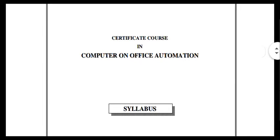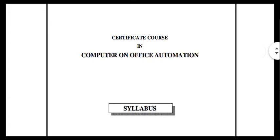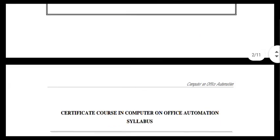Now, if you are using computer automation, there are two different things — theory and practical. In theory, there are 40 marks covering parts 1, 2, and 5. This is the basic part. How do we cover all this? Now we will see.